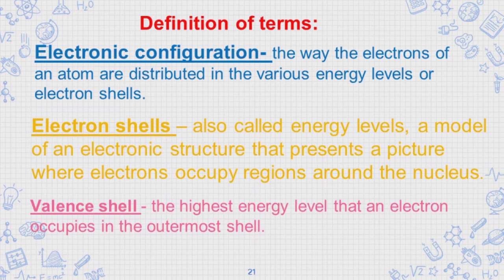3. Valence shell: the highest energy level that an electron occupies in the outermost shell.